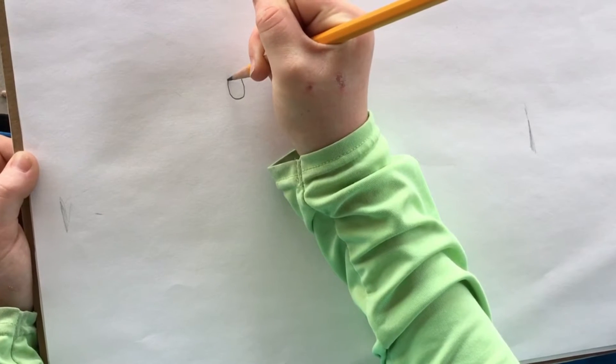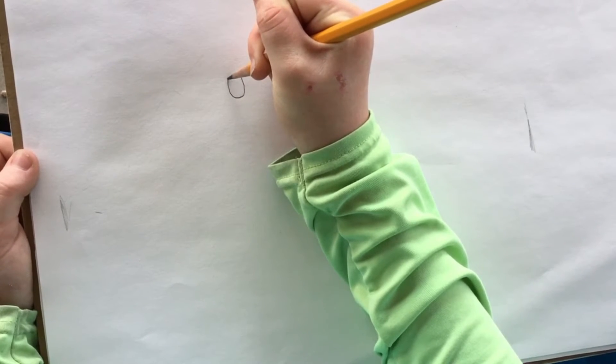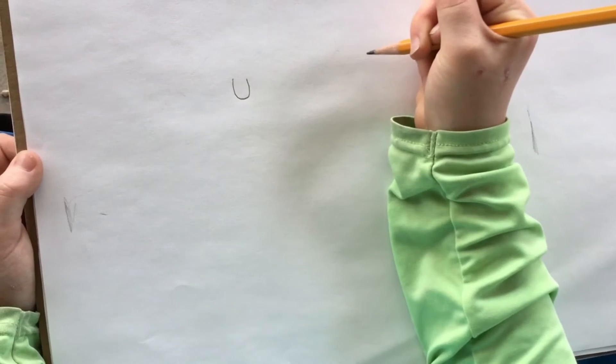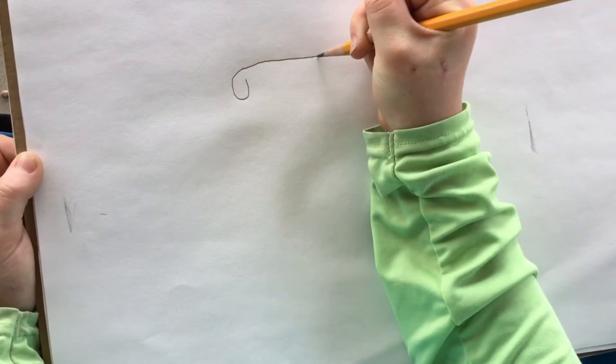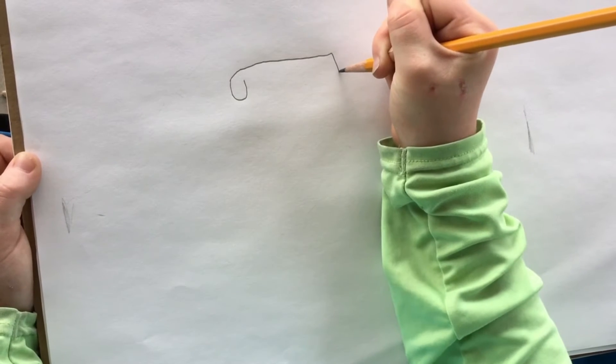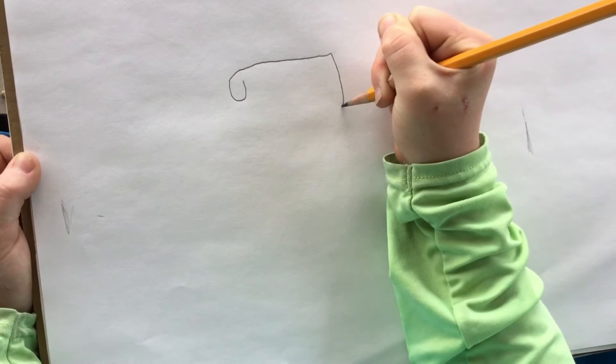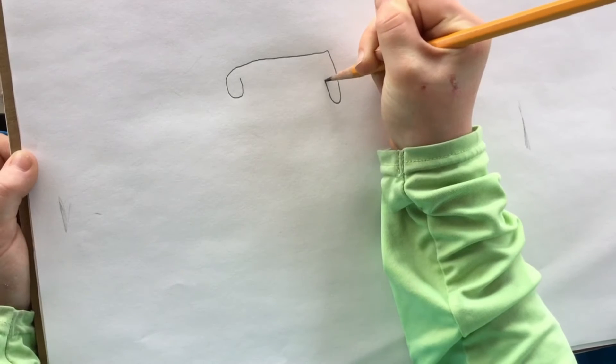Then you want to do a line kind of like this. Now you want to do a line down and another u-shape up.